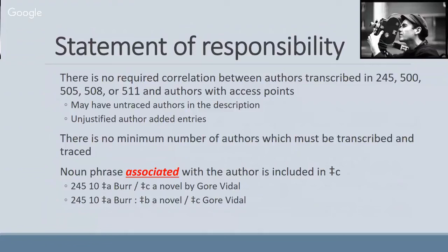There's no required correlation between what you put in a 245 and the 500 note fields and the access points. You could have what's called untraced authors in your description but not provide them a 700 field and an access point — there is no minimum number of authors that have to be transcribed and accessed. The idea is giving some of this power to the catalogers: you understand your community, your library, your users, so you'll be best able to decide what works so that your users can find the materials. One thing they did change is that if there is a noun phrase associated with the author, include it in subfield C — so if the item says 'by Gore Vidal,' you include that 'by' in your 245.